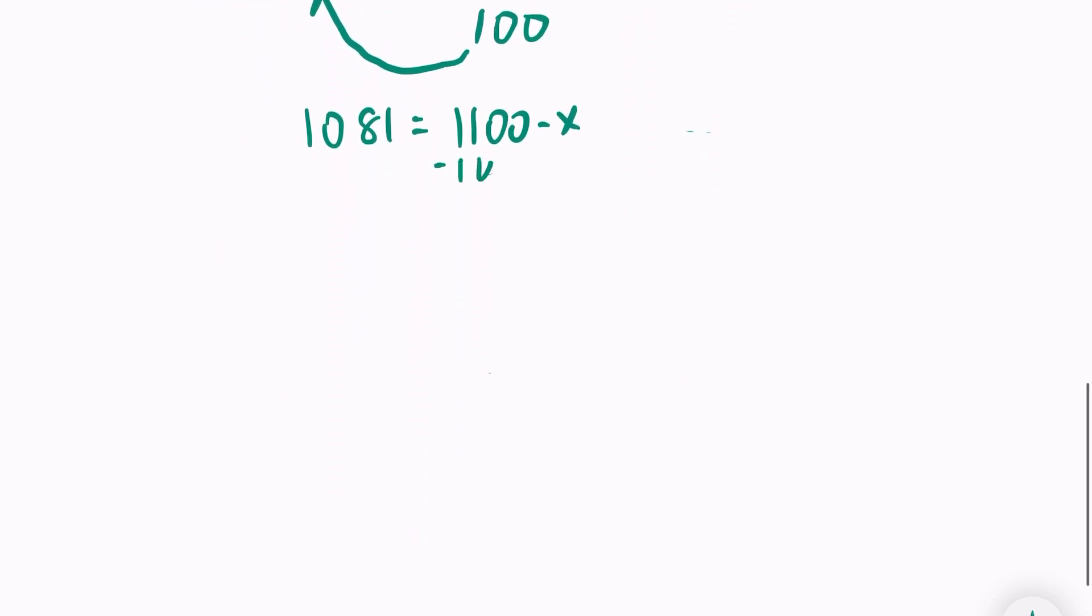I'm going to subtract 1100 from either side. So we have negative 19 equals negative x. Thankfully, I can get rid of that negative - x is just equal to 19, because we can't have a negative percentage.